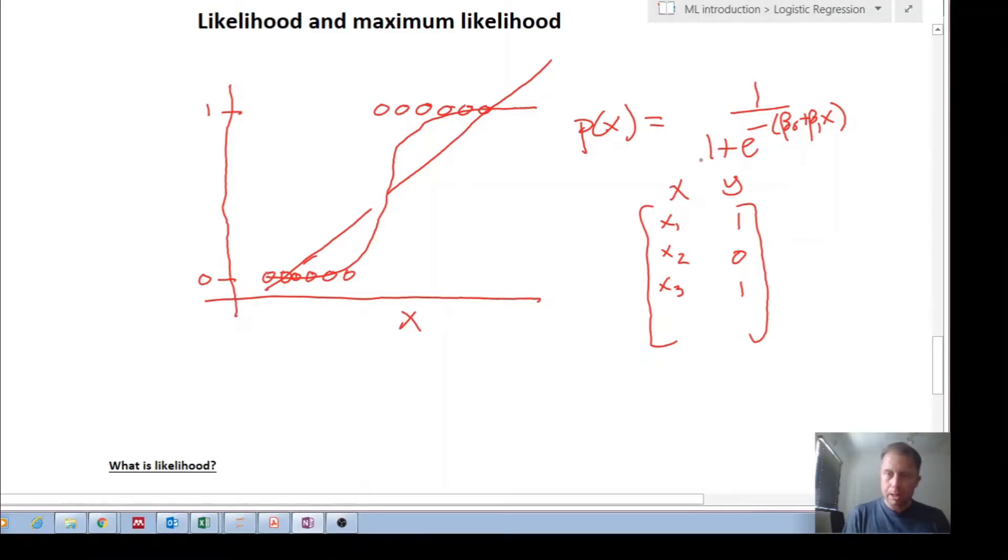This is our actual training data, and what we want is we can choose this kind of model that predicts a probability. Remember, a probability between zero and one.